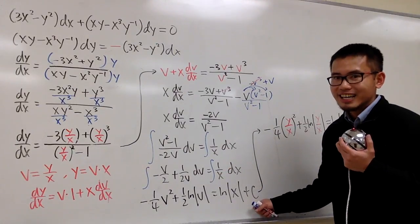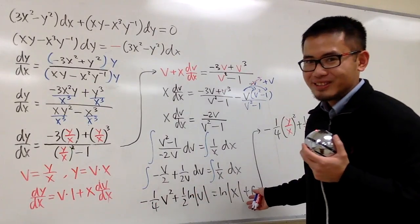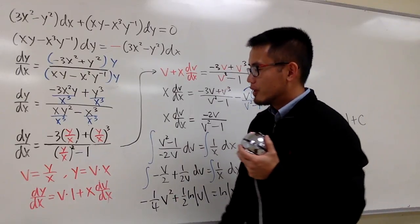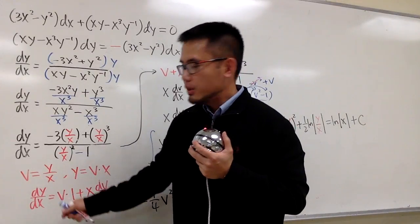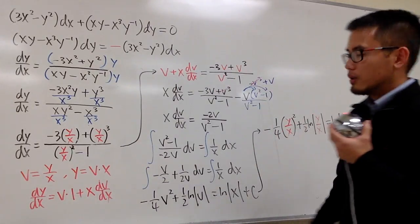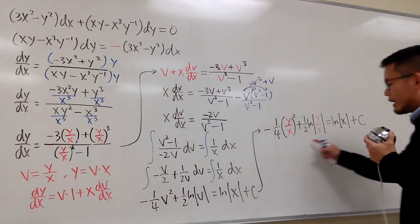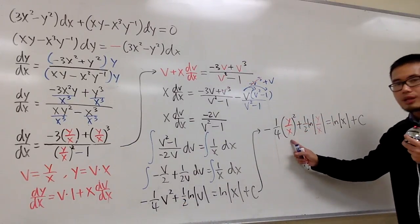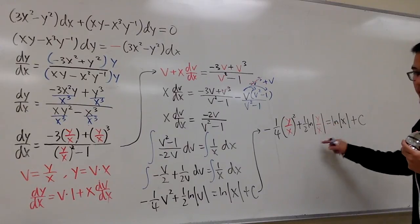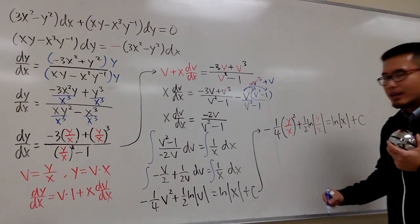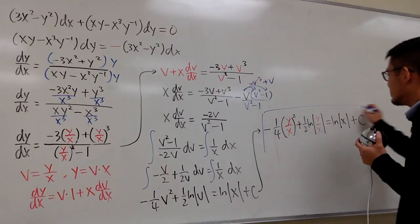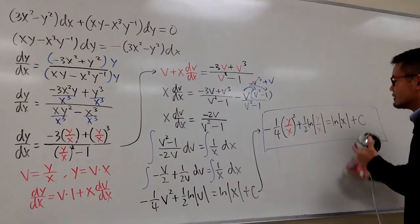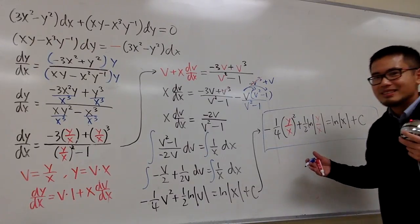So we have negative v²/4 plus (1/2) ln|v| equals ln|x| plus C. At the very end, we back-substitute v = y/x. Replacing every v with y/x, we get negative (y/x)²/4 plus (1/2) ln|y/x| equals ln|x| plus C. As long as you put this down, you can get full credit, as there are no strict rules on how much further you need to simplify the answer.